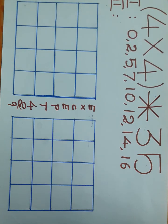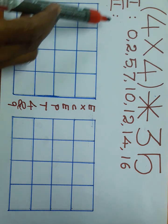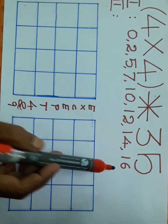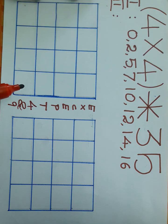In a magic square table 4 by 4, the sum of each direction is 35. Take numbers from 0 to 17. I have written the first set of numbers: 0, 2, 5, 7, 10, 12, 14, 16, and then write the next numbers.